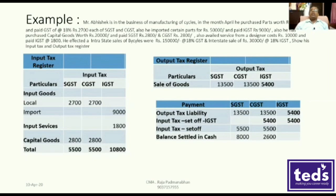SGST and CGST on the entire Rs. 80,000. Also, he imported several parts of Rs. 4,000. In the month of April, he purchased Rs. 9,000. He also purchased Rs. 20,000, with Rs. 2,800 per CGST and SGST. Also, there is a service from a designer for Rs. 10,000, and those services are made from an outside state.